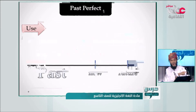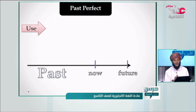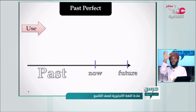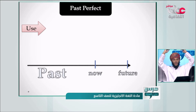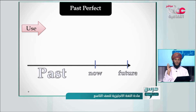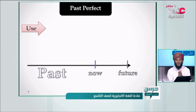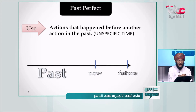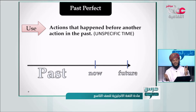Now let's move to the first objective, which is the past perfect. In the past simple, we use it when we have a specific time in the past, like 'I went to Muscat yesterday.' What about the past perfect? We use the past perfect for actions that happened before another action in the past, without any specific time. We have two actions.